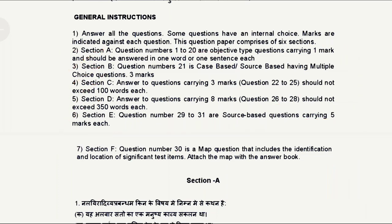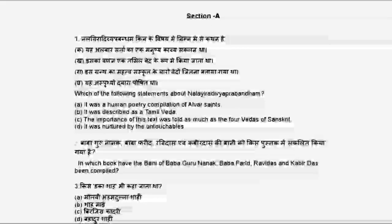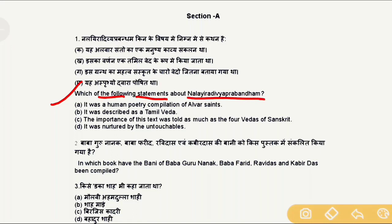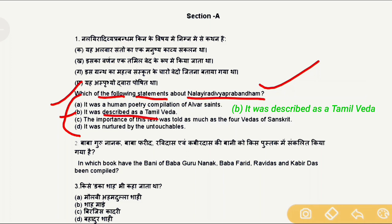We will start with Section A, which is multiple choice questions. Question 1: Which of the following statements is about Nalayira Divya Prabandham? The correct answer is that it was described as a Tamil Veda. Nalayira Divya Prabandham is also called the Tamil Veda.